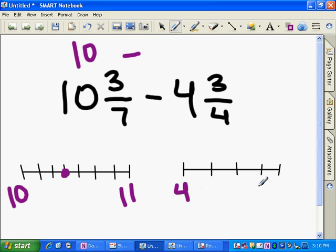And 4 and 3 fourths is between 4 and 5. And I know these aren't equal distances apart, sorry. But the 3 fourths is right here, and this is closer to the 5. So 10 minus 5 is 5. So that means 10 and 3 sevenths minus 4 and 3 fourths is somewhere around 5.